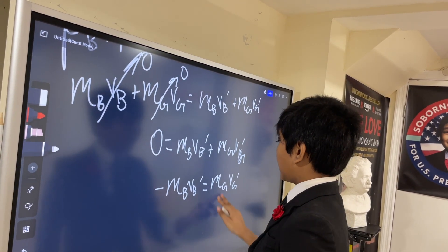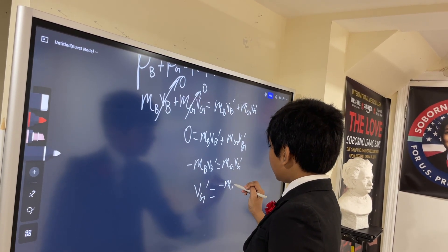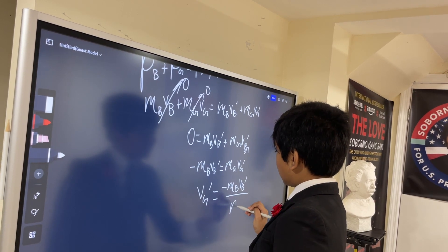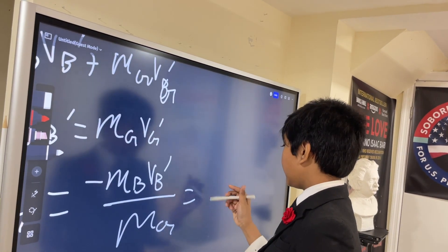Thus, dividing by MG on both sides gives us VG prime is minus MBVB prime over MG. Now, we simply multiply or plug in. Whoops.